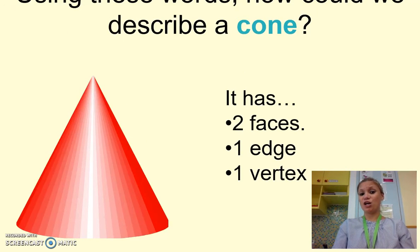This is a cone. People remember it by thinking of an ice cream cone. It has two faces, the circle on the bottom and the smooth curved part of the cone. It has one edge, the circle at the bottom, and one vertex at the top.